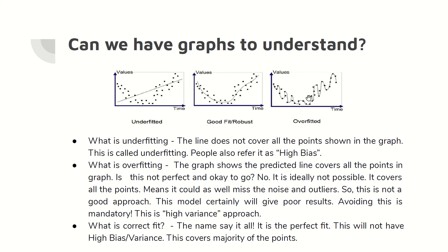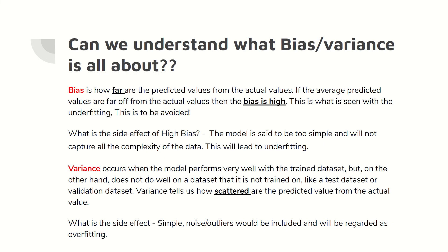What is overfitting? On the right-hand side, the line has absolutely covered all the points in the graph. This cannot be possible — it is ideally never possible. It covers all the points, meaning it could also cover the noise and the outliers. So it is not a good approach, and here we call it the high variance approach. Underfitting is called the high bias approach, overfitting the high variance approach. Correct fitting is a perfect fit where we will not have high bias or high variance — it tries to cover the majority of the points. Before we go deeper into deep learning, we need to understand what bias and variance are.